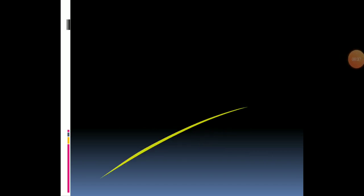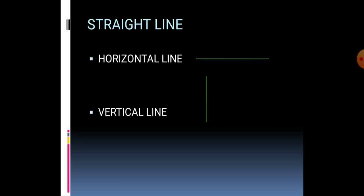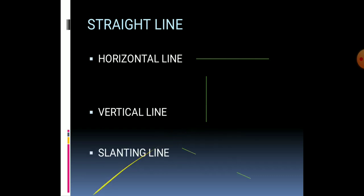Now, a straight line is divided into three types: horizontal line, vertical line, and slanting line. We had already discussed this before in previous classes — it's just for revision.